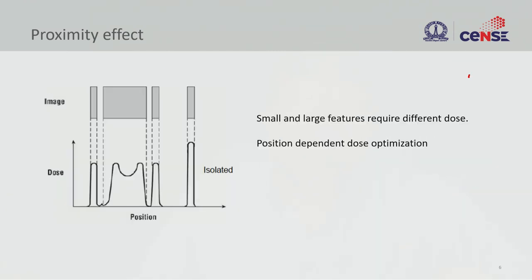In a real scenario, an isolated feature is very nicely defined, but a feature flanked by neighboring structures will not come out with the right dimension. The reason is that the dose from these neighboring structures affects each other, creating undesirable critical dimension variation.